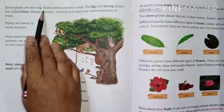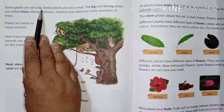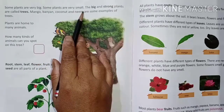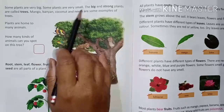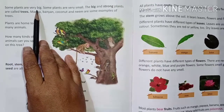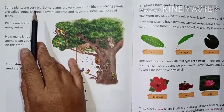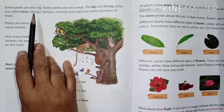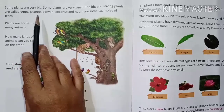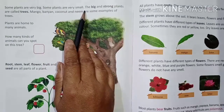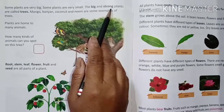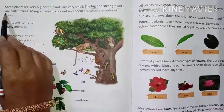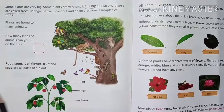Some plants are very big — the trees are very big. Some plants are very small. Now tell me which types of plants are big. Trees like banyan trees, mango trees, and coconut trees are very big. The big and strong plants are called trees.